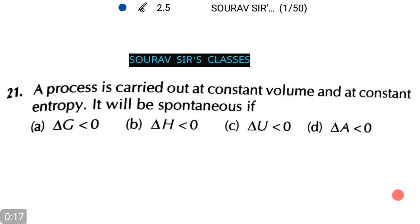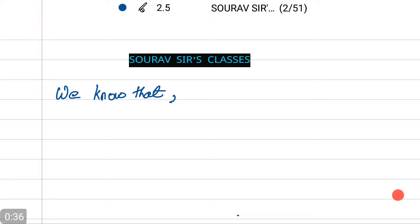A process is carried out at constant volume and at constant entropy. It will be spontaneous if either of the following options is true. Let us see what the correct answer is. I will do the calculation in a separate page so that you can see and be very clear with it. We know that entropy change ΔS is always greater than Q by T from the second law of thermodynamics.